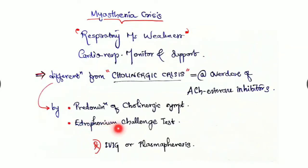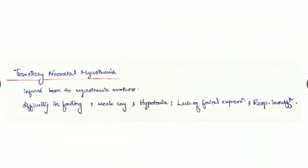The edrophonium challenge test can differentiate from cholinergic crisis. Treatment includes good cardiorespiratory support and IV immunoglobulin or plasmapheresis.